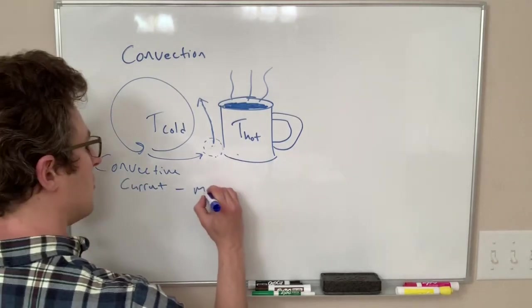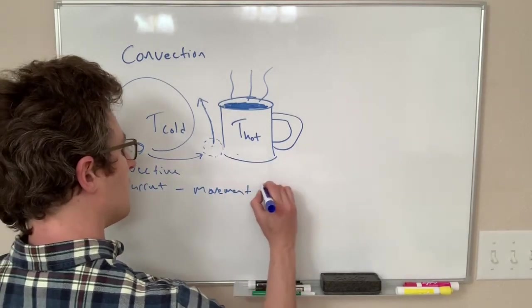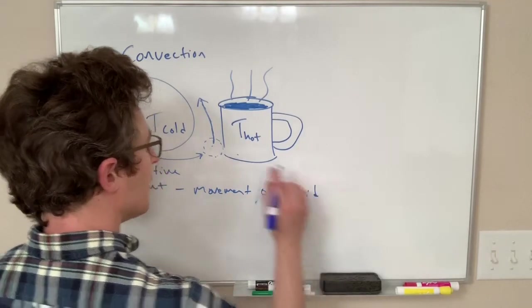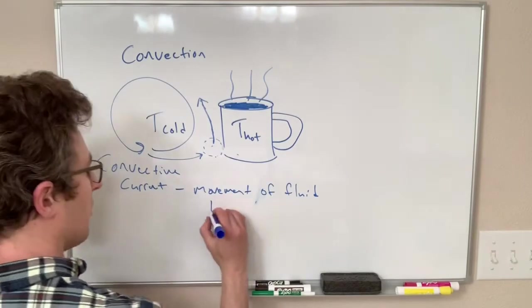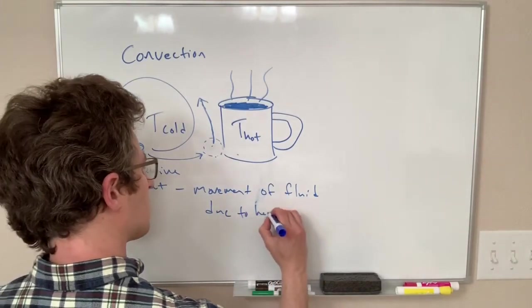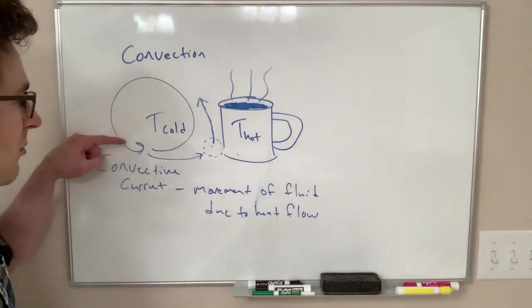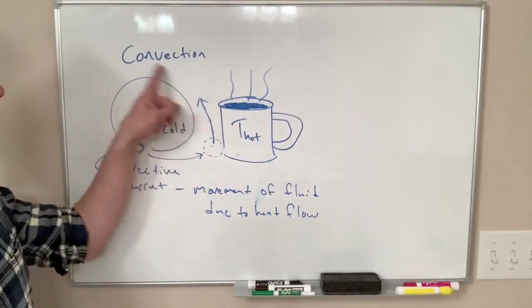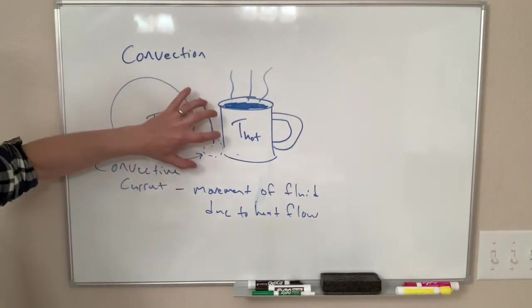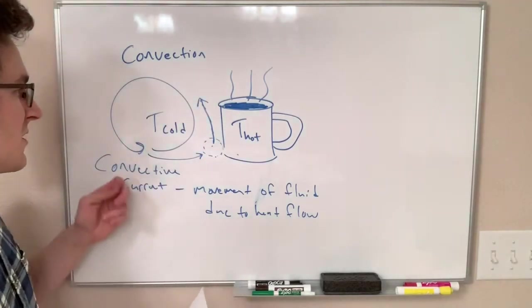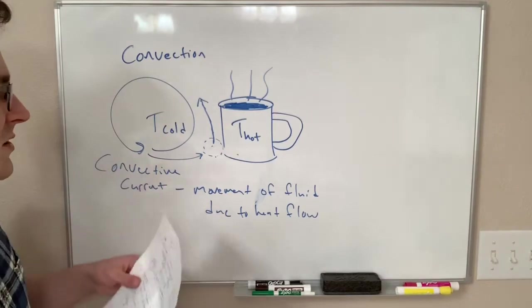That is movement of fluid, physical movement of fluid due to this heat flow. And as a result of this you end up losing much more heat than you would if this air was just perfectly standing still. And because this depends on lots of things about the shape of the object and what's going on with the air, the equations for convection turn out to be tough and not worth going into for Physics 210.